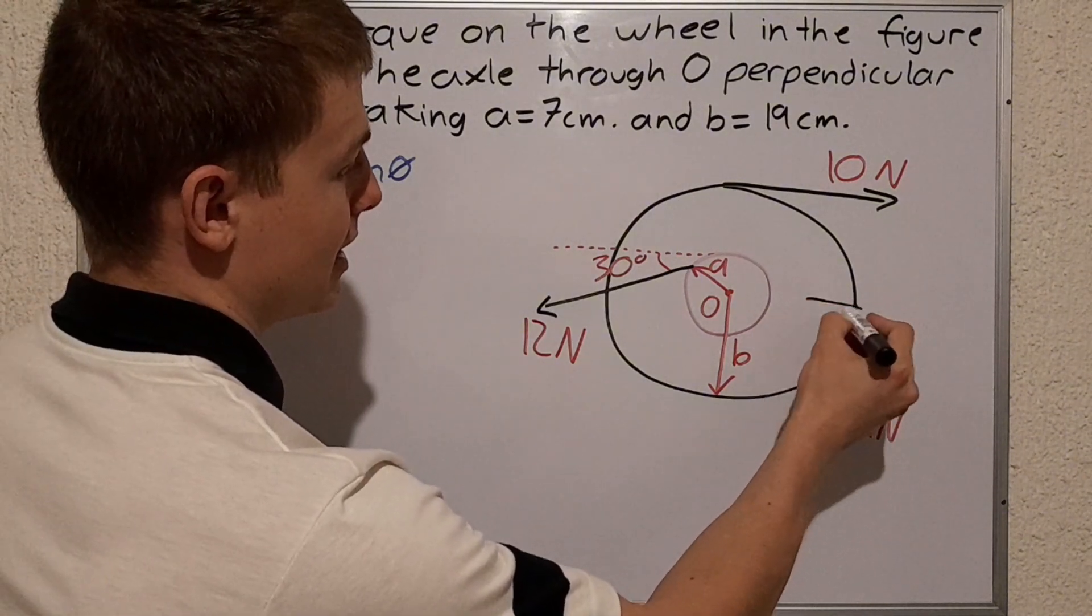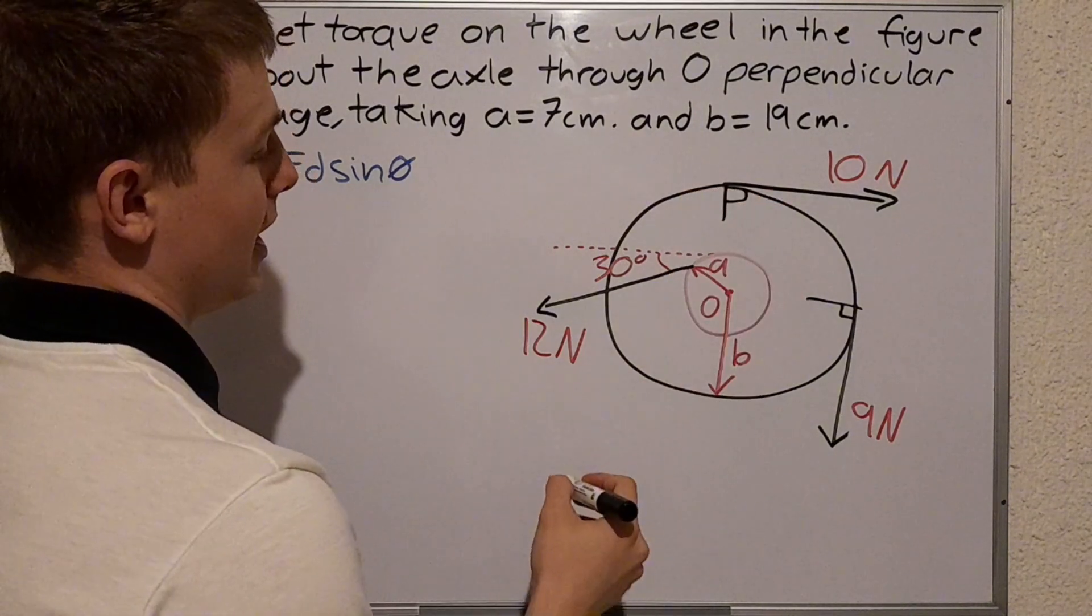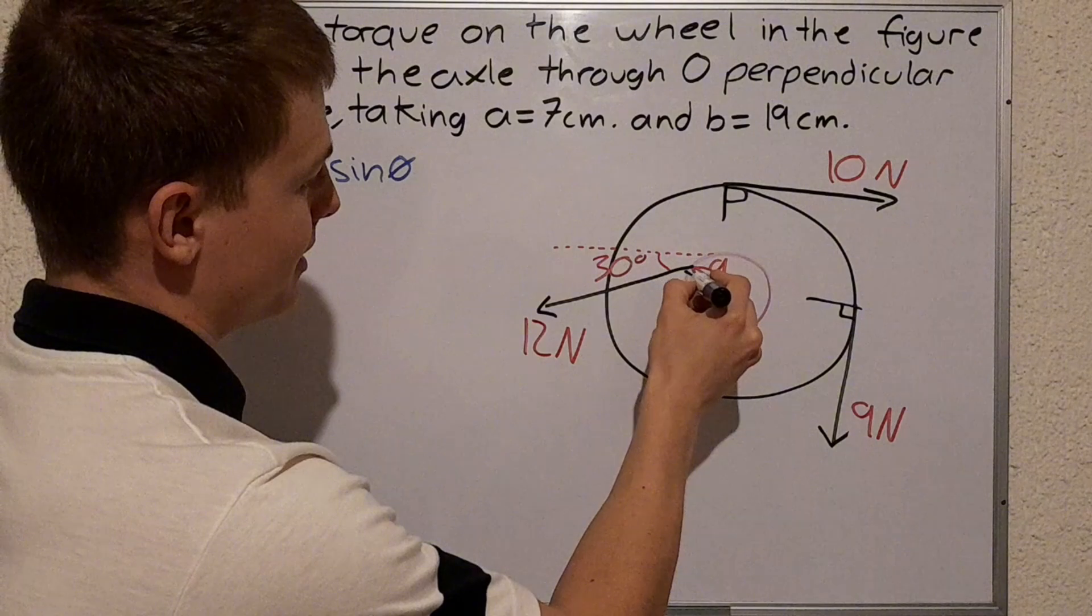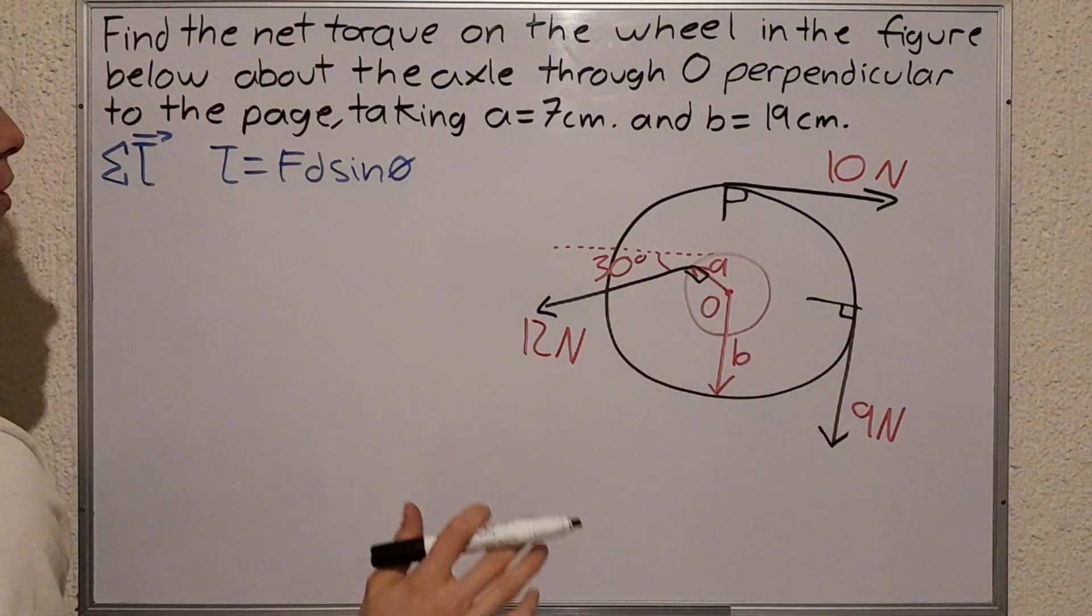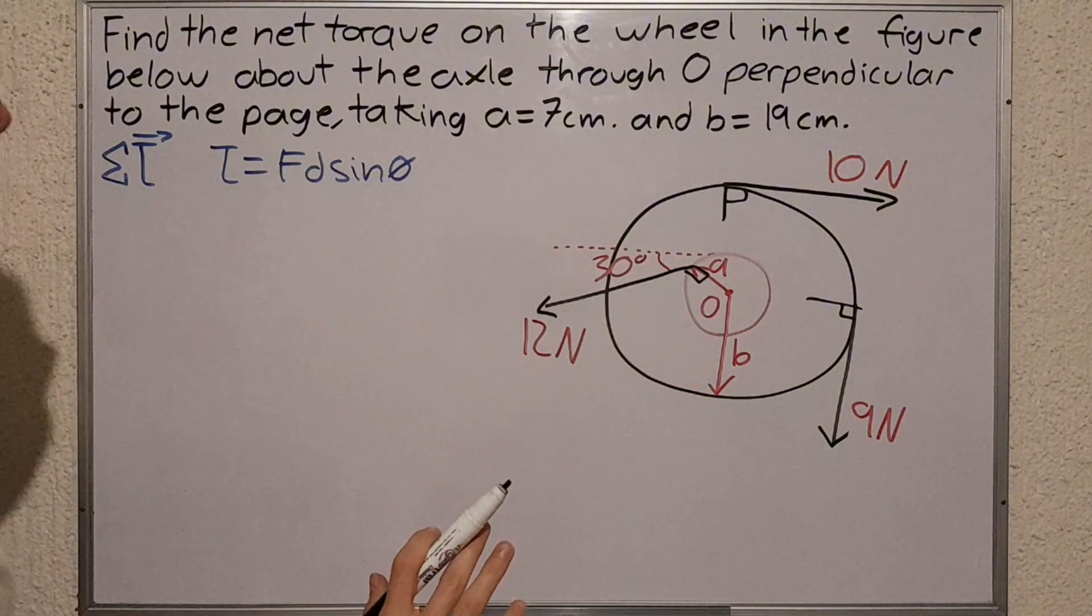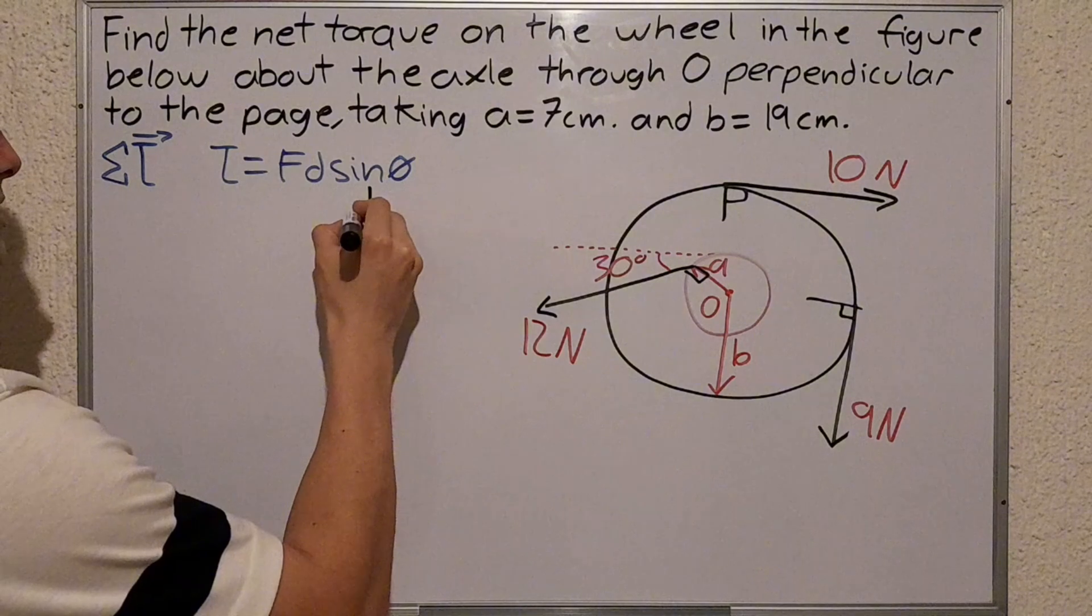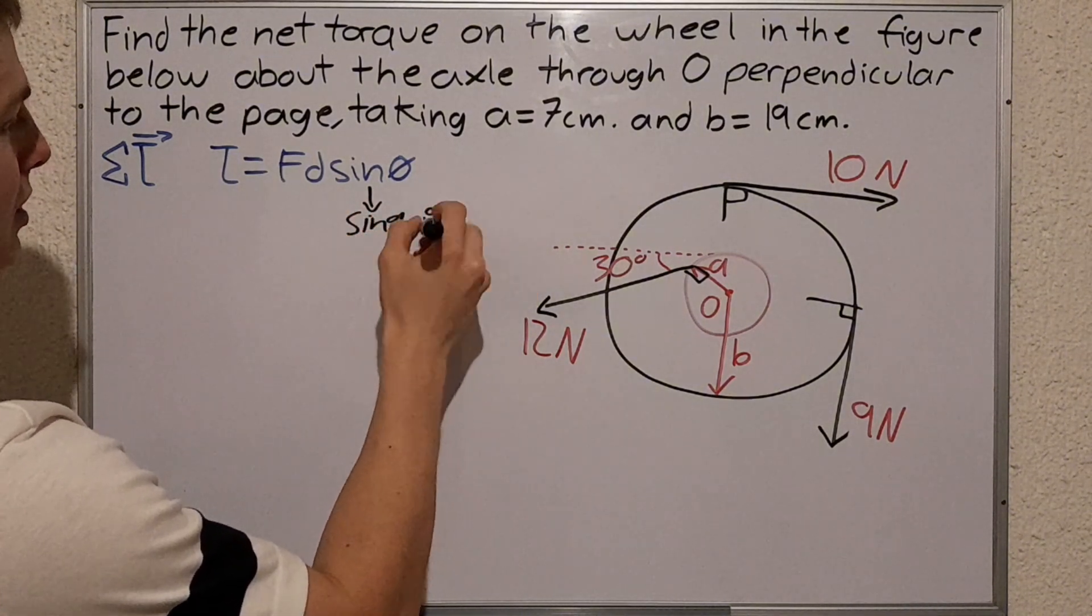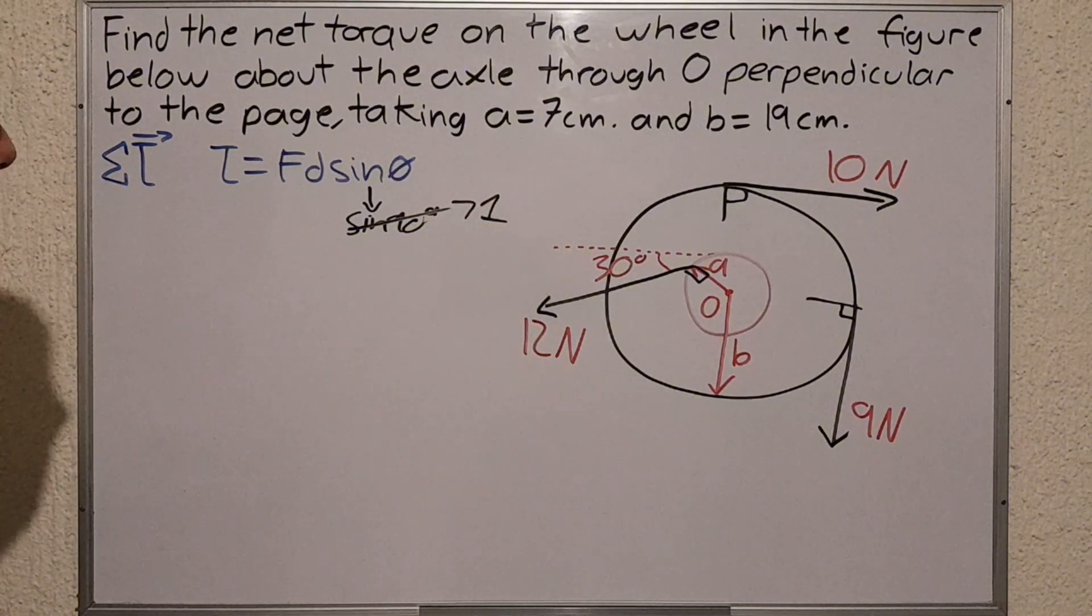So the angle that we're gonna take is gonna be 90 degrees. This means there's an angle of 90 degrees here as well, and if the drawing was perfect there would be a 90 degree angle, let's say, so you could see it. So don't worry.